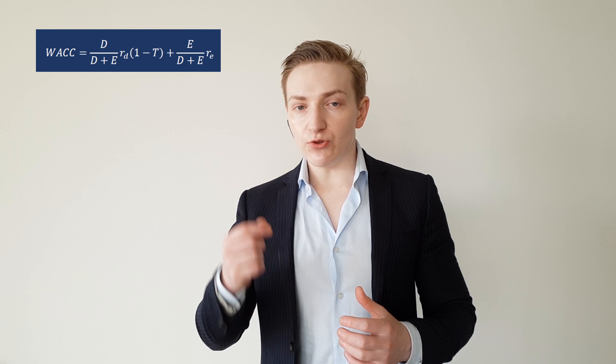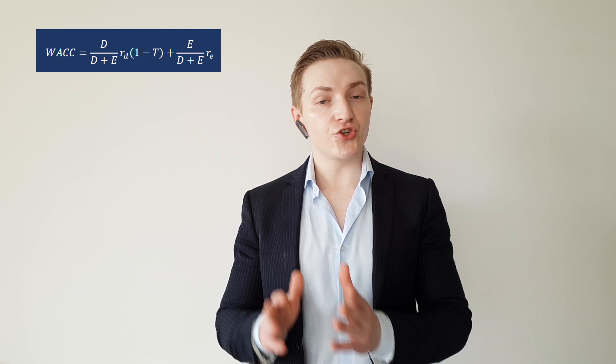So the weighted average cost of capital, as the name suggests, is going to be the weighted average of all the costs of the firm's constituent sources of capital in proportion to their contribution to the firm's capital structure. That is, you take the cost of capital for each of the individual capital components, and then you get a weighted average of those costs.